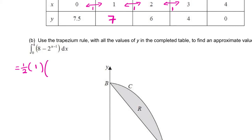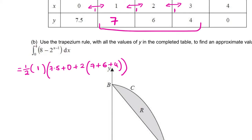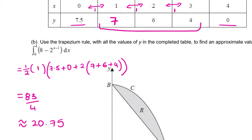Multiplied by the first value of Y, 7.5, plus the last value of Y, 0, plus 2 lots of all the middle values — the 7 plus 6 plus 4. I always do 2 times the middle values, plus the two end values, then multiplied by the width and a half. I'm going to put this into my calculator exactly how this looks, and I get 83 over 4, which is approximately 20.75.